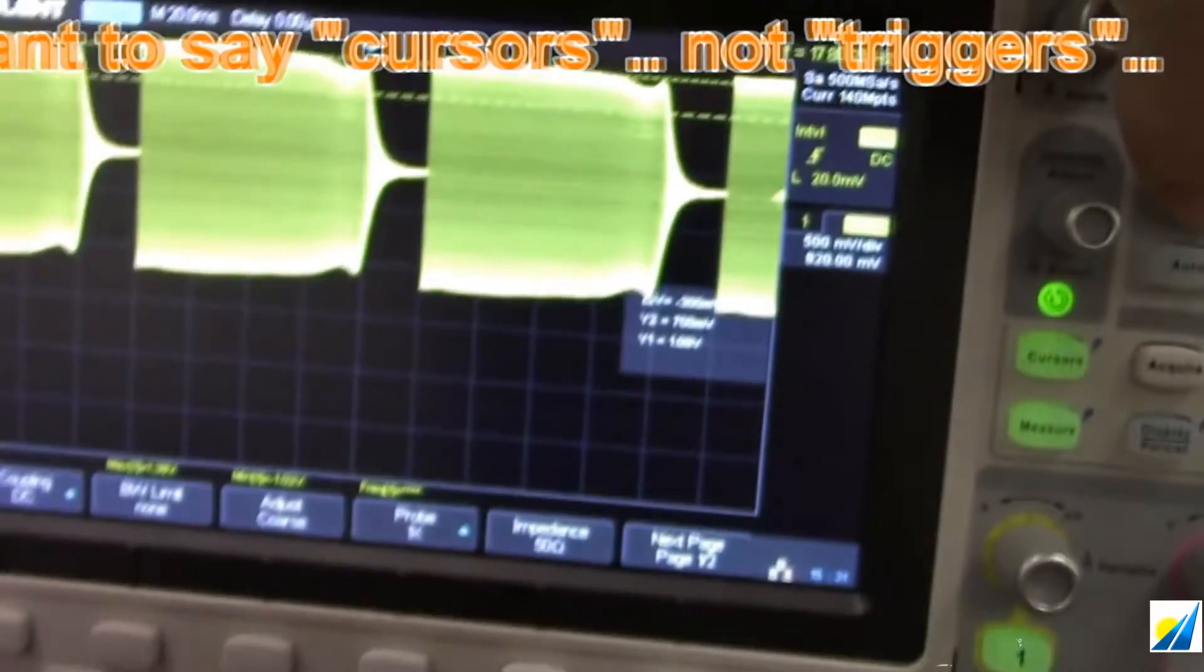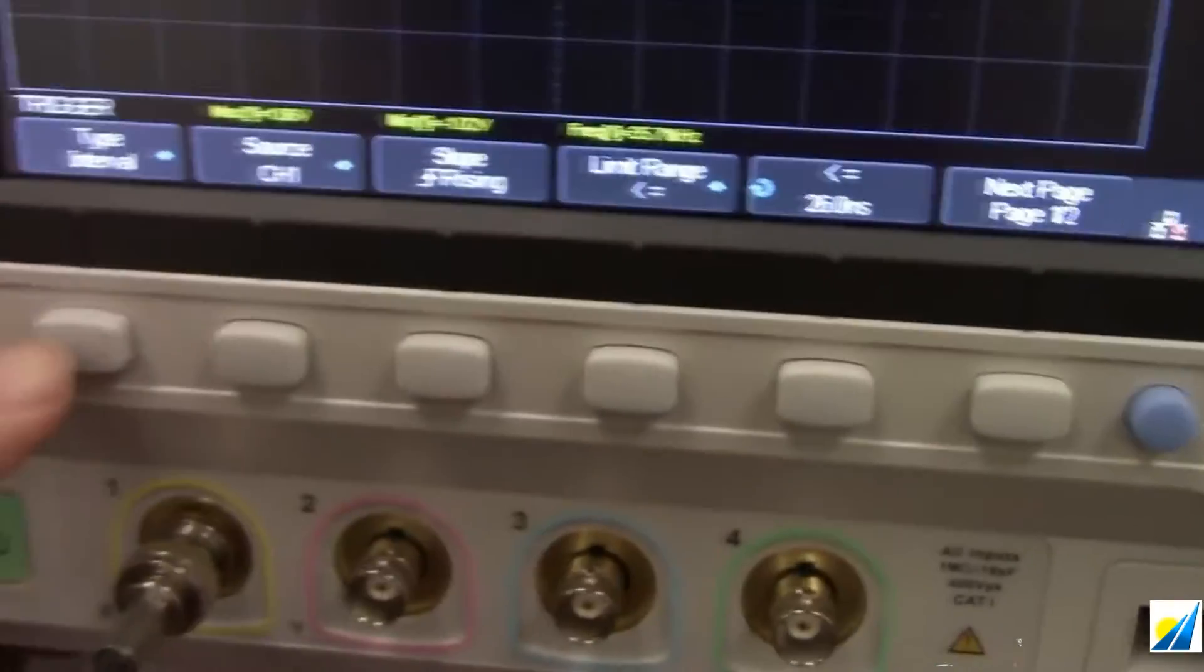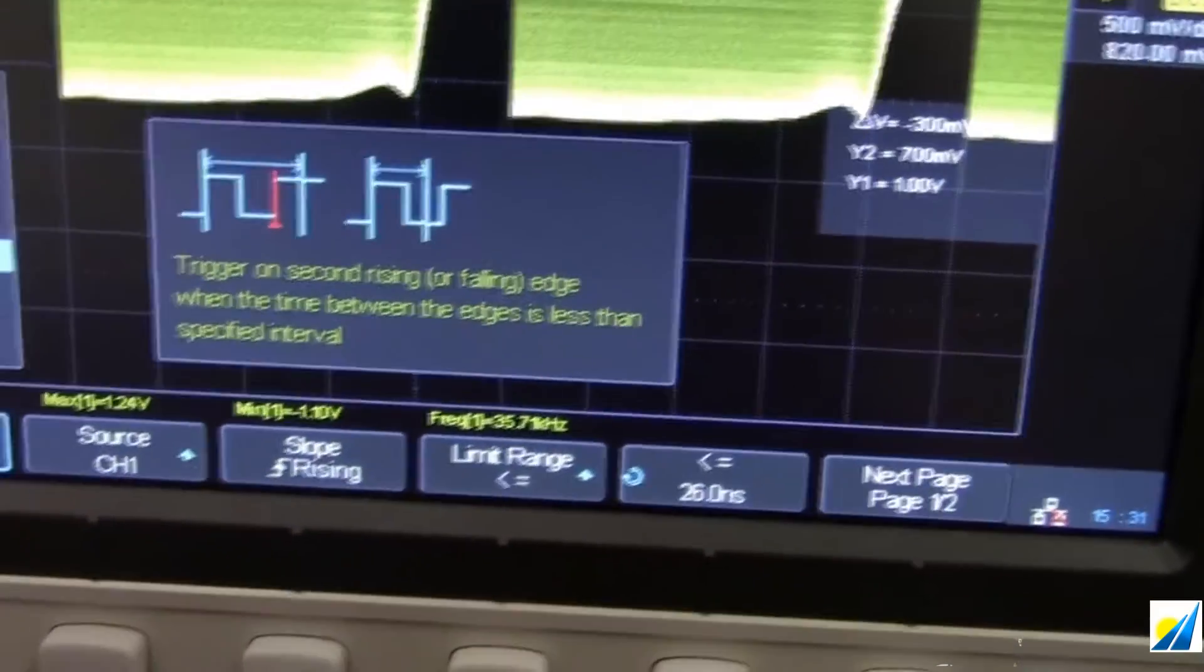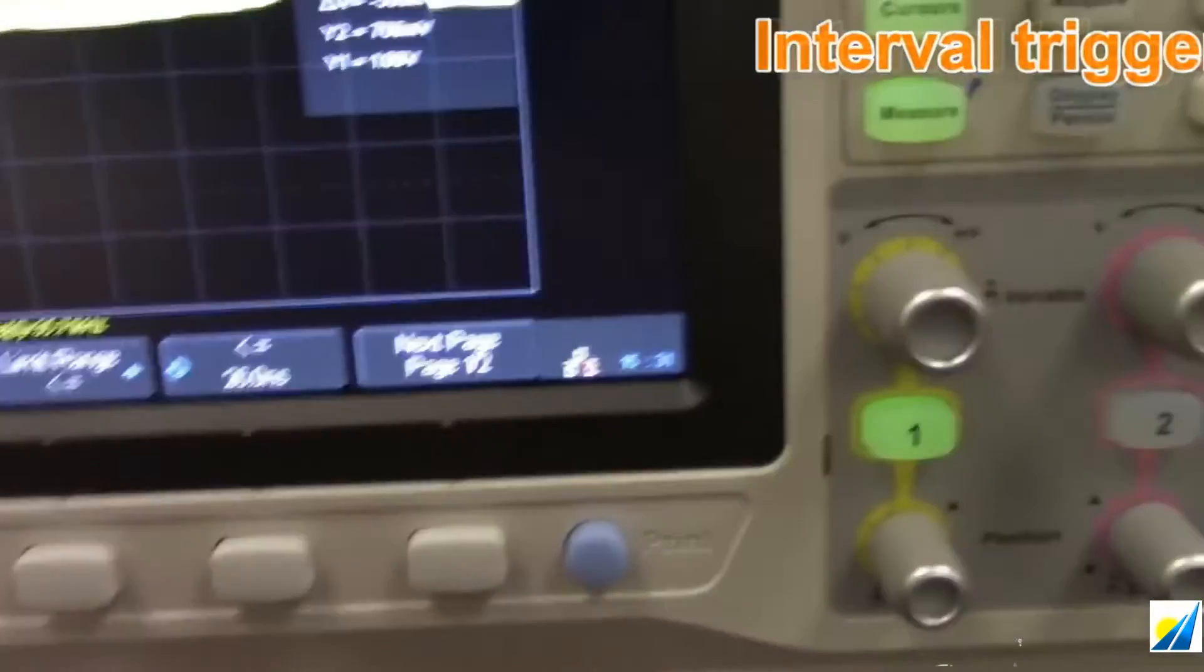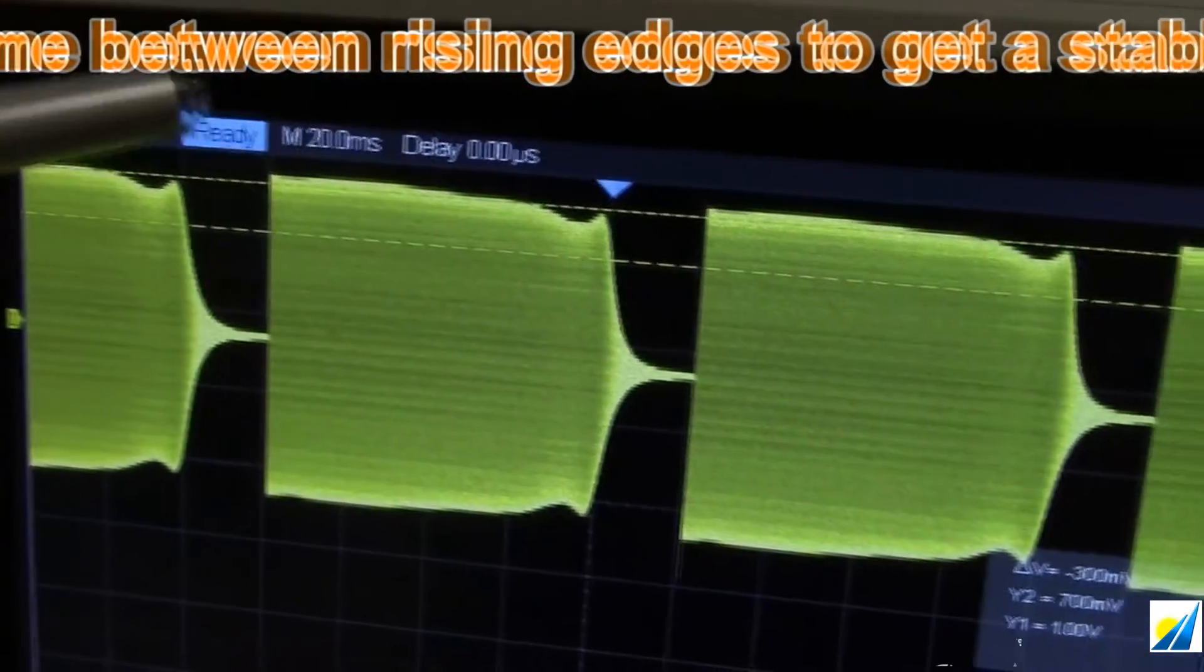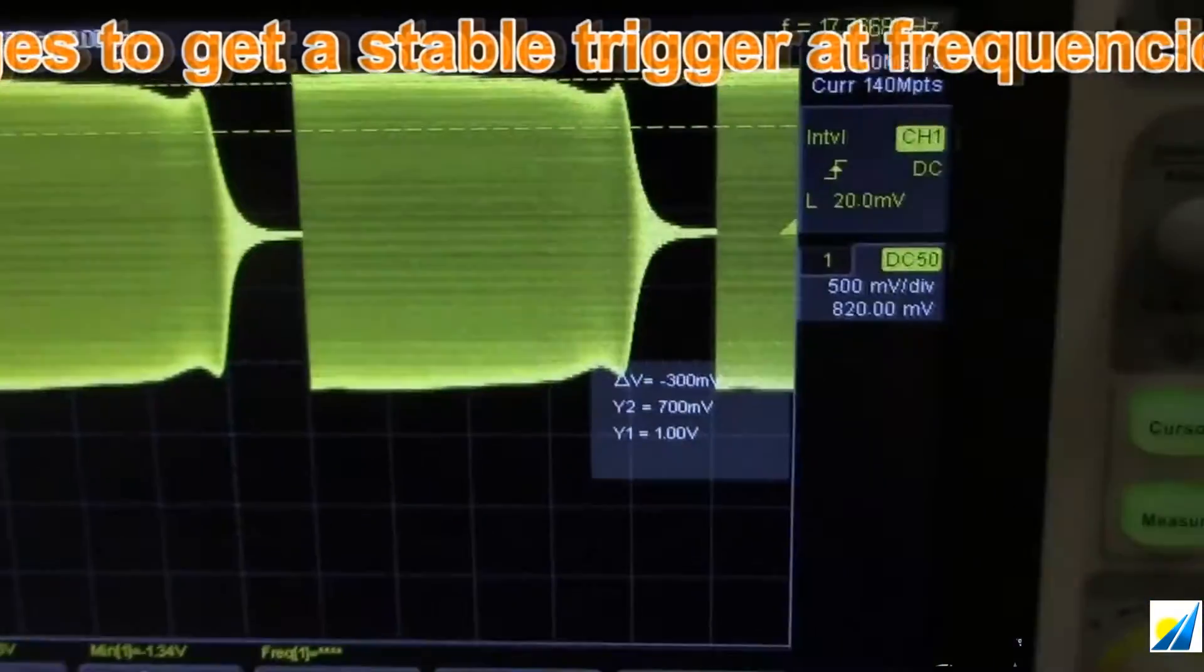In this particular case, triggering on these can be a little bit tricky. So what I had done was I used the interval trigger. The interval trigger, if we just press, will give us a little bit of help information. Basically, we're just looking for a time delay. And so I just set the time delay range to about 26 nanoseconds and I get a nice stable trigger. Again, we are triggering stably here.